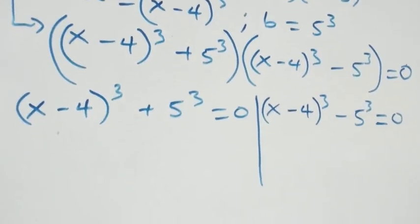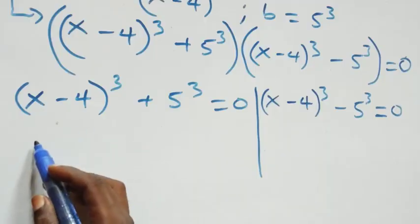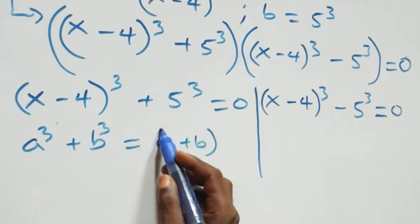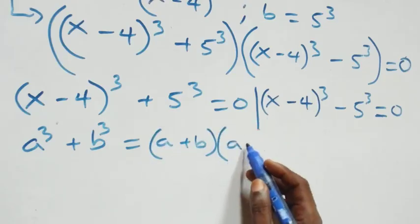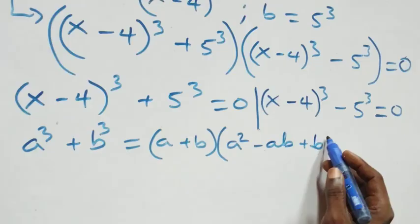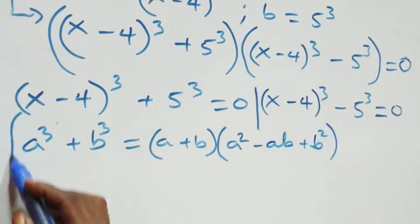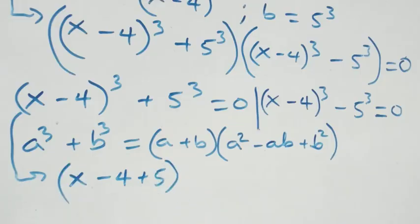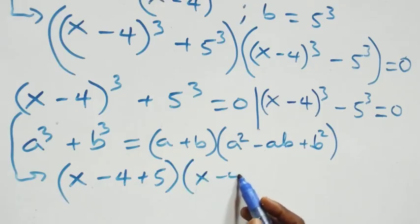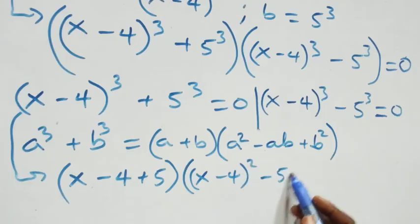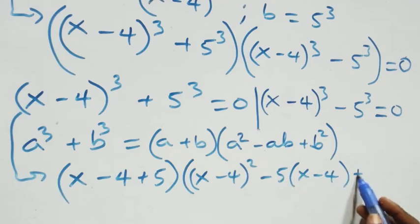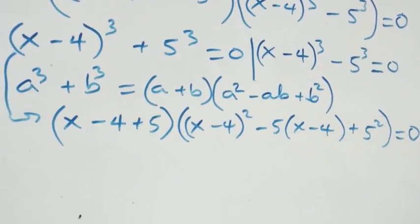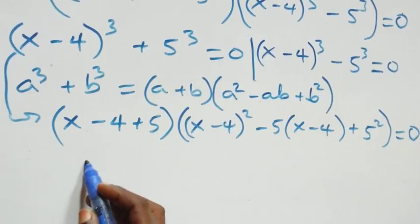Solving from the first case, this follows from a³ plus b³, which is the same thing as (a plus b) into brackets, times (a squared minus ab plus b squared). So what we have here becomes (x minus 4 plus 5) in the form of (a plus b), into brackets (x minus 4) squared minus 5 times (x minus 4) plus 5 squared.